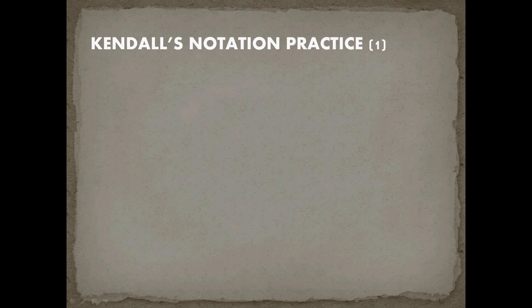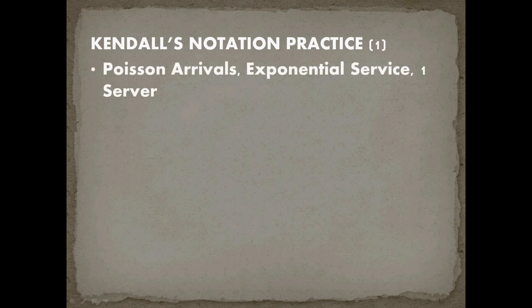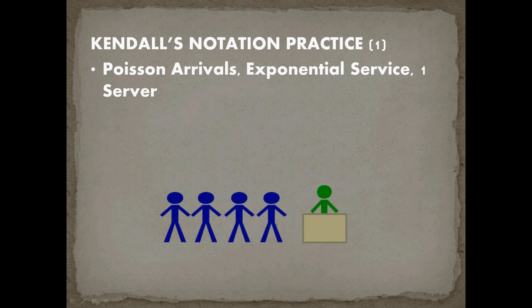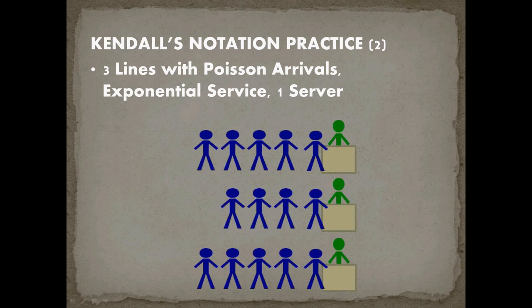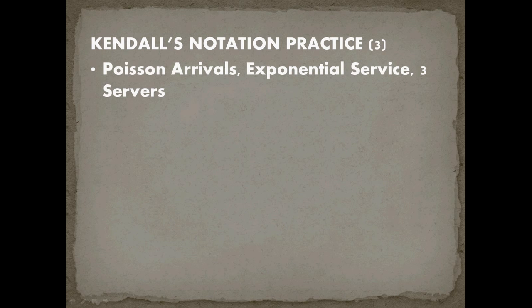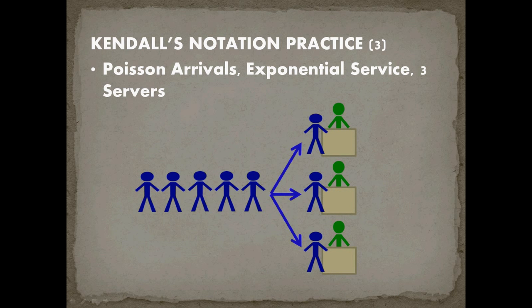Let's practice Kendall's notation. Poisson arrivals, exponential service, and one server would be described as MM1 — a single line into one server. Three separate lines each with Poisson arrivals, exponential service, and one server each would be described as three MM1s. Poisson arrivals, exponential service, and three servers sharing one line — like Chick-fil-A — would be an MM3.